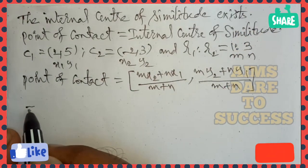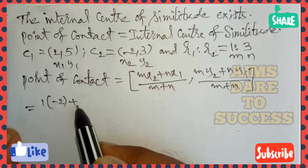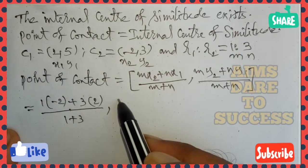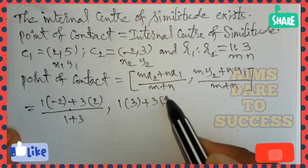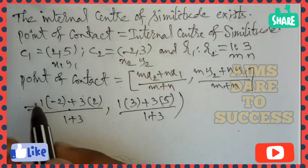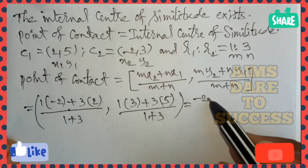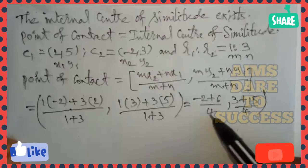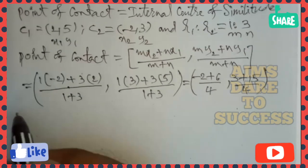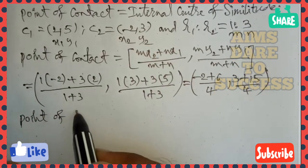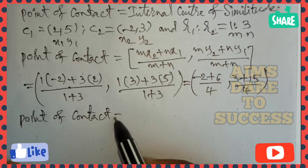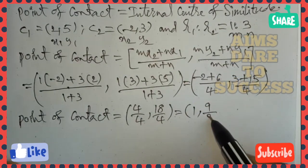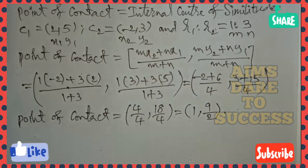Substituting: x-coordinate = (1×(−2) + 3×2) / (1+3) = (−2 + 6) / 4 = 4/4 = 1. y-coordinate = (1×3 + 3×5) / (1+3) = (3 + 15) / 4 = 18/4 = 9/2. Therefore the point of contact is (1, 9/2).